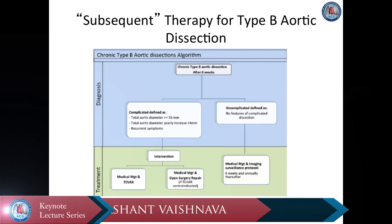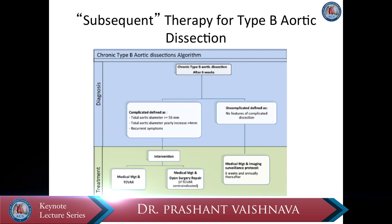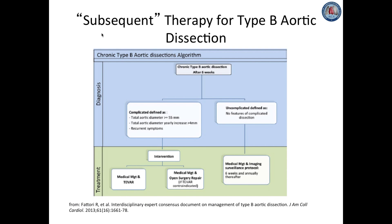Patients with uncomplicated acute type B aortic dissection should be treated with medical therapy. However, they remain at considerable risk for morbidity and mortality. Surveillance imaging is important: imaging of uncomplicated dissection should be performed at admission, 7 days, discharge, and 6 weeks, with annual imaging and follow-up recommended thereafter. Blood pressure control and lifestyle modifications including lifting, pushing, and pulling restrictions are also important. Intervention is recommended for complicated chronic type B aortic dissection, defined by a total aortic diameter greater than or equal to 55 mm, total aortic diameter yearly increase greater than 4 mm, and/or recurrent symptoms.